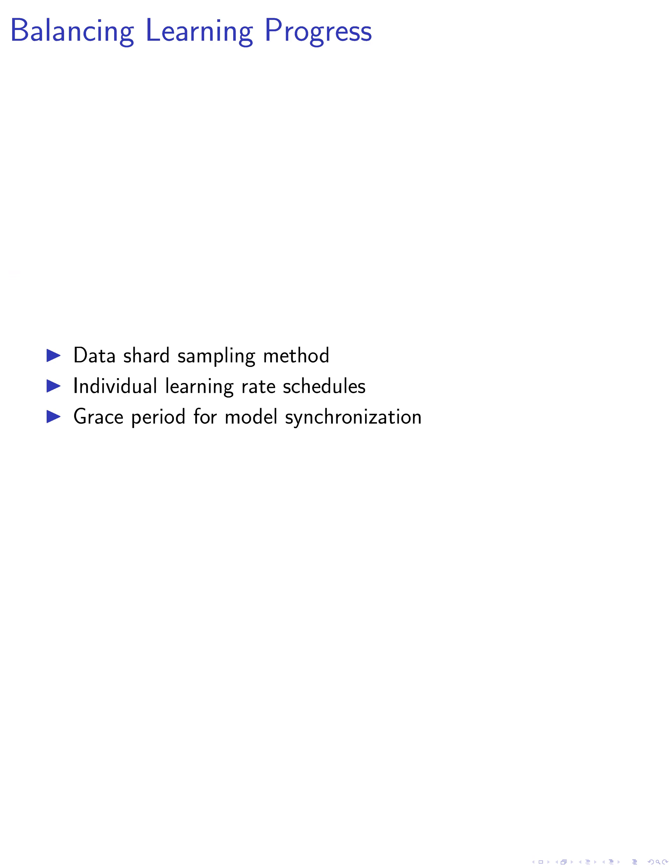We also propose a method to balance the learning progress on different data shards by sampling a data shard inversely proportional to its learning progress. Additionally, we assign each data shard its own learning rate schedule, which includes a linear warm-up combined with a cosine learning rate decay.